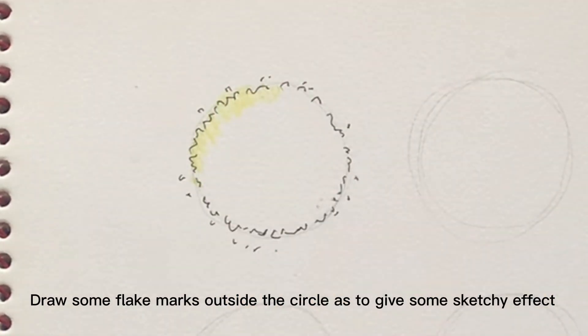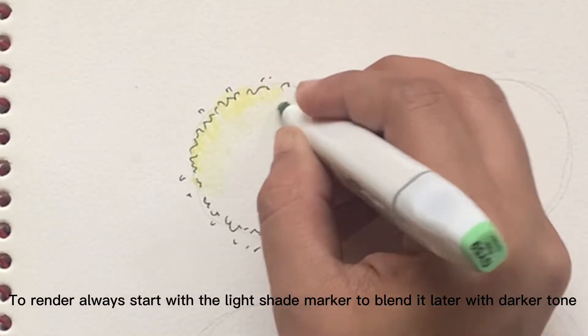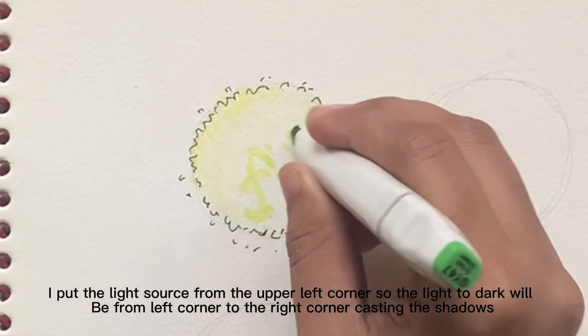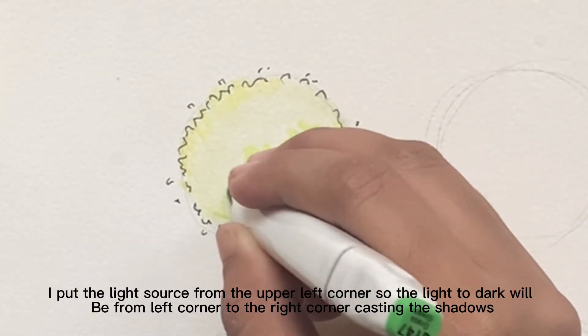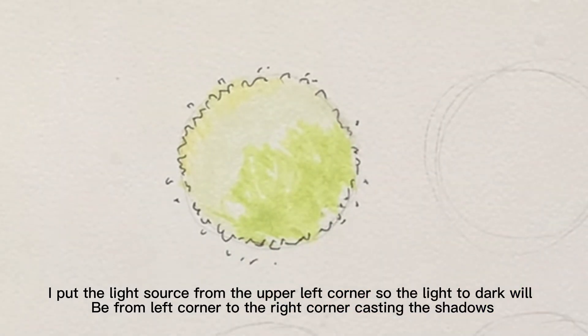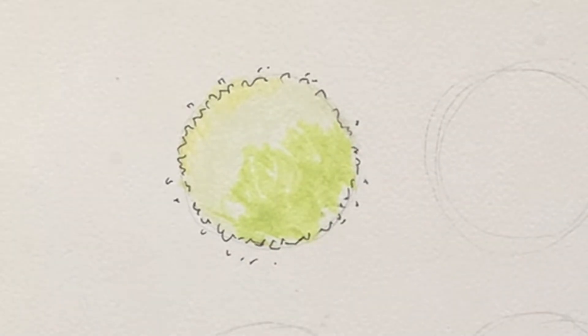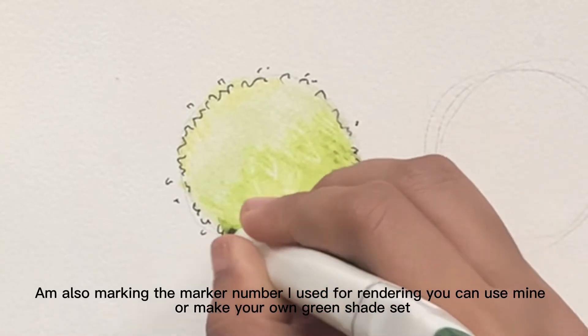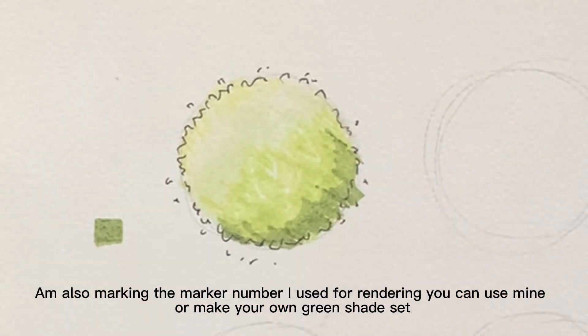To render, always start with the light shade marker to blend it later with darker tone. I put the light source from the upper left corner so the light to dark will be from left corner to the right corner casting the shadows. After the light tone now I will use the dark green tone to the shaded corner of tree. I'm also marking the marker number I used for rendering. You can use mine or make your own green shade set.